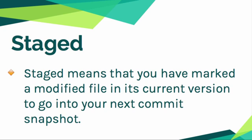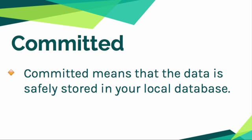You've got staged, and that means that you've denoted that the modified file is ready to go into your next commit snapshot, but you haven't actually committed it yet. So first you've modified it, now you've staged it — you're ready to make this a snapshot. And then finally you're going to commit it, and that means that the data has been safely stored in your local database.